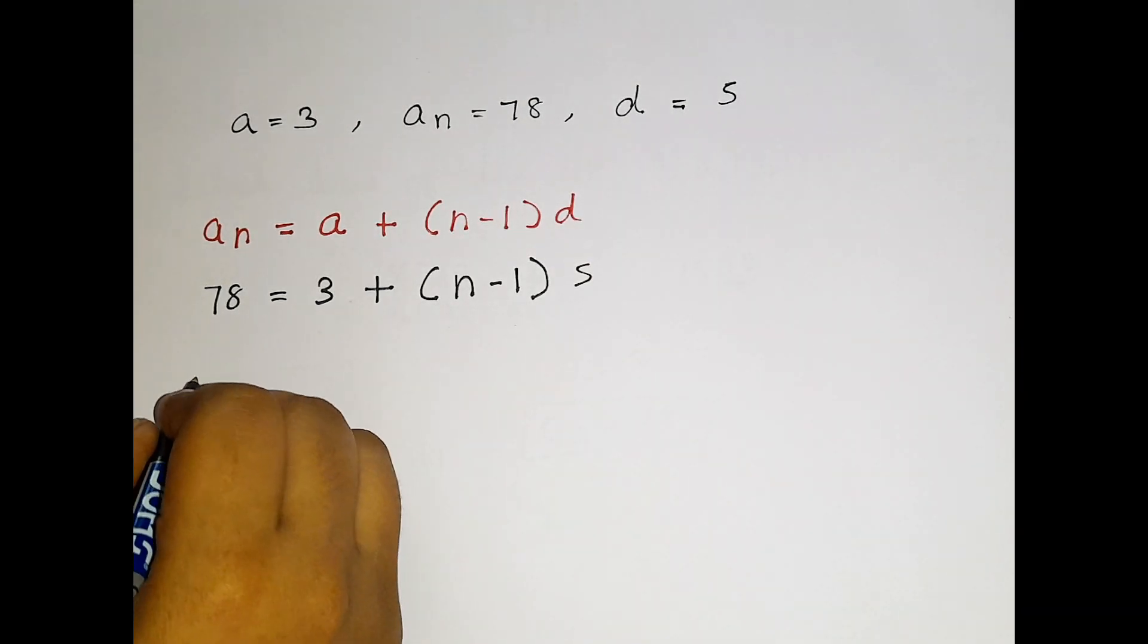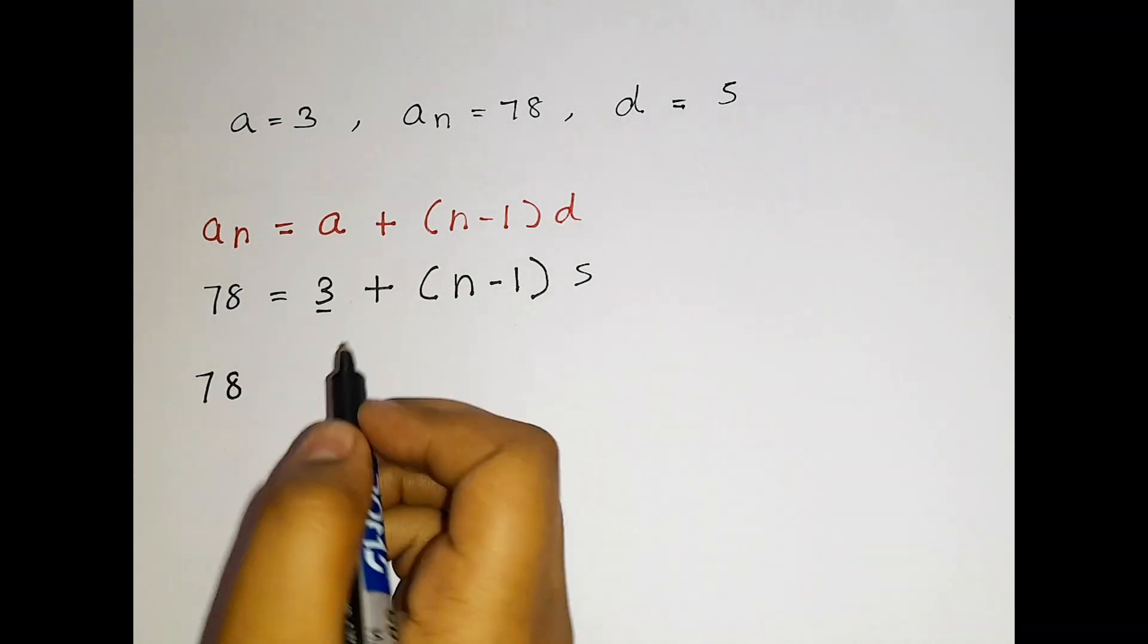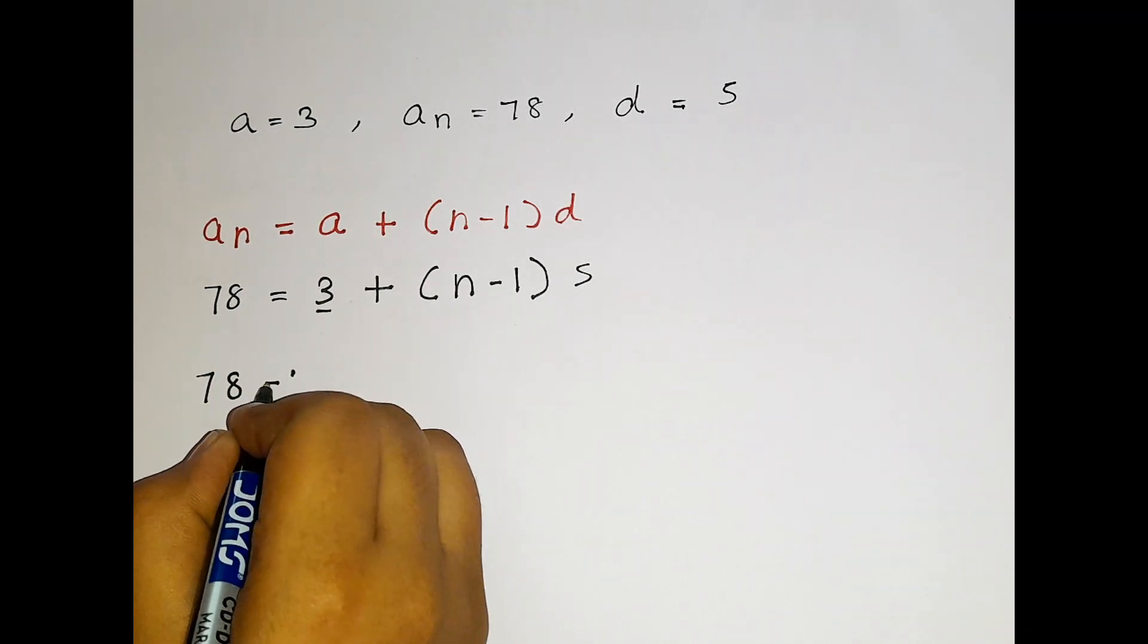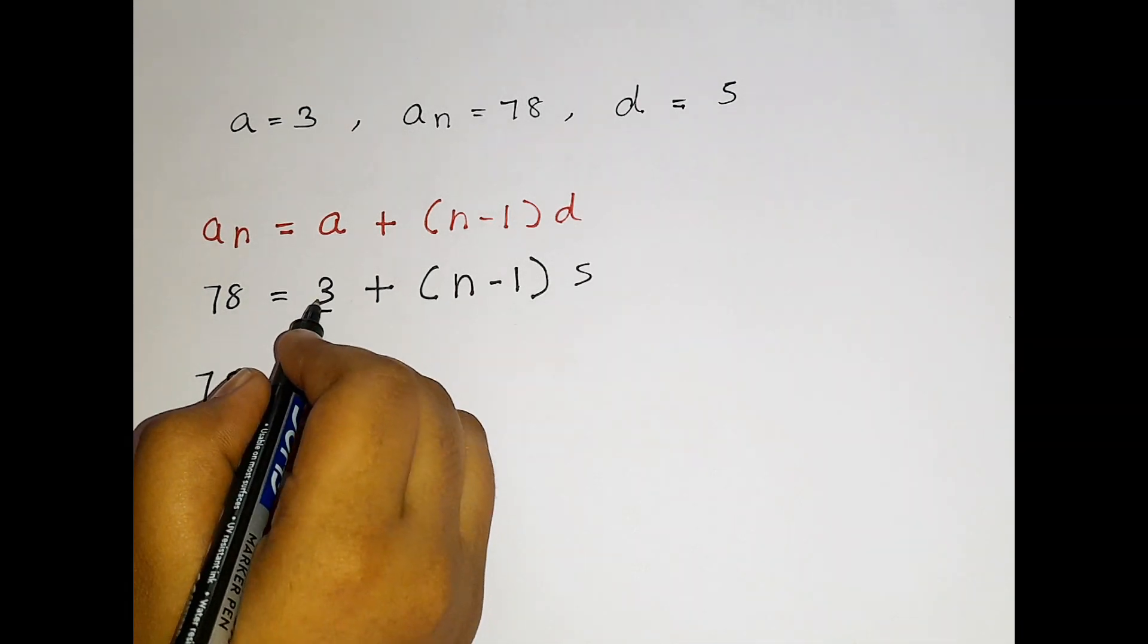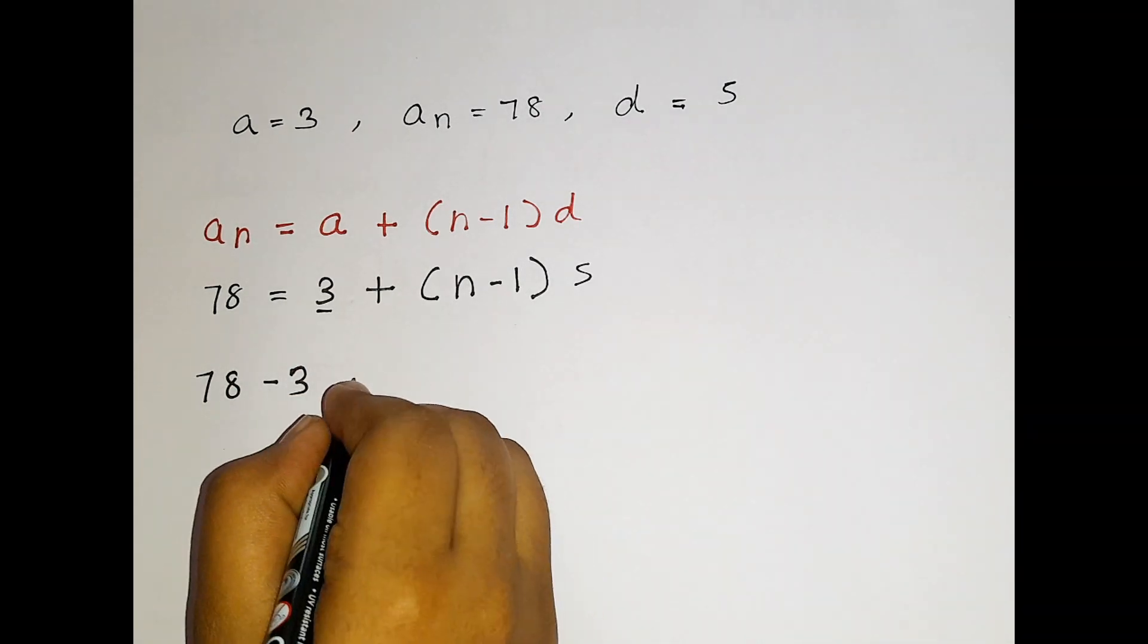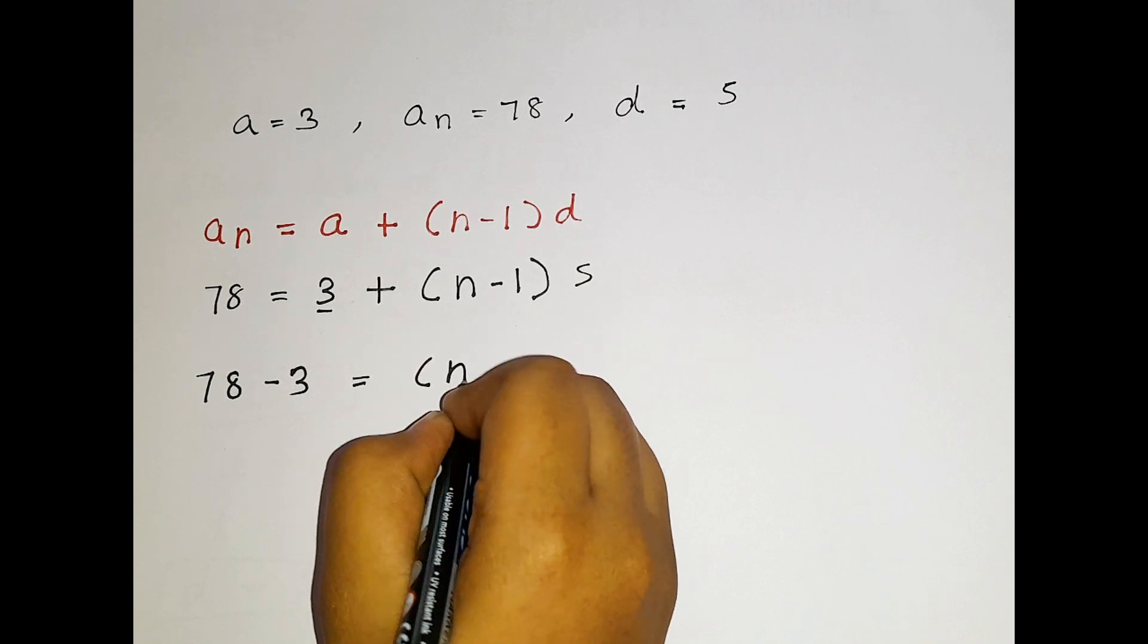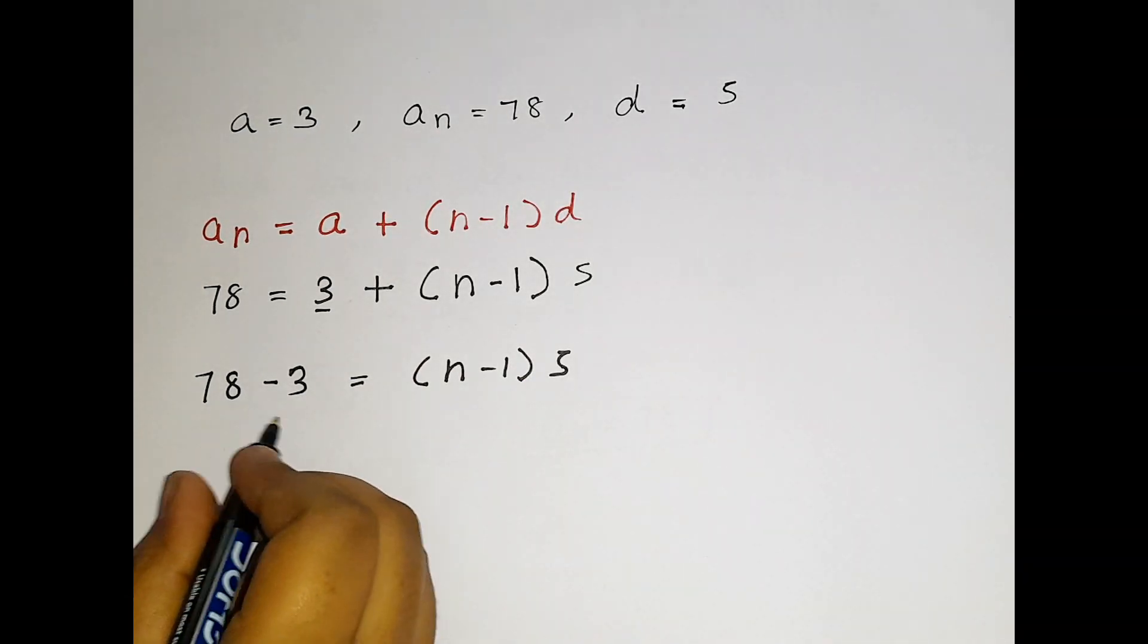Now what we can do? Let us write the 78 as it is and when we get this 3 to this side, it changes into minus 3. Why? Because here it is plus 3. When it comes to this side, it changes into minus 3. Is equal to, now let us write this n minus 1, close the bracket 5 as it is. When we subtract them, we get 75.